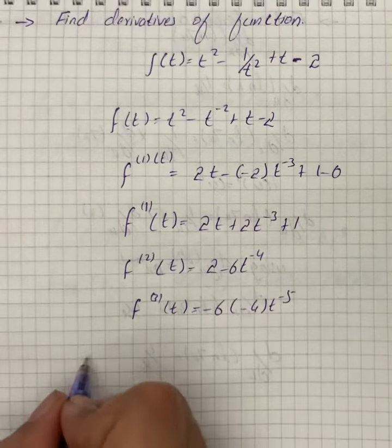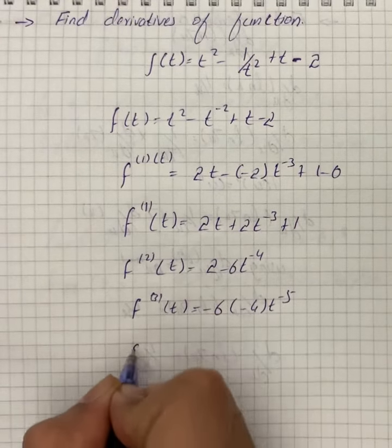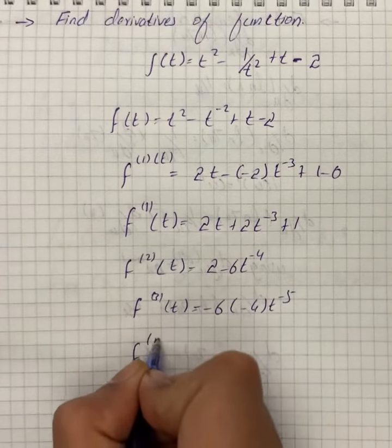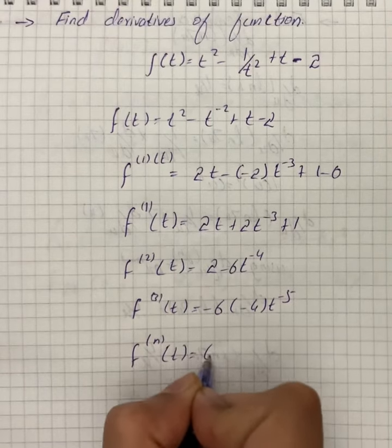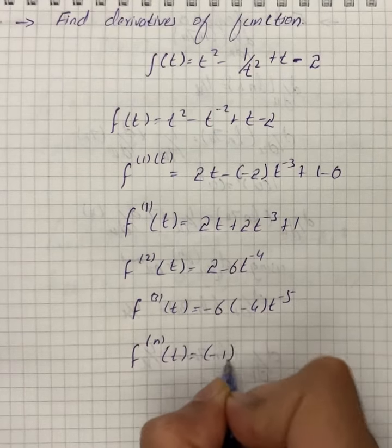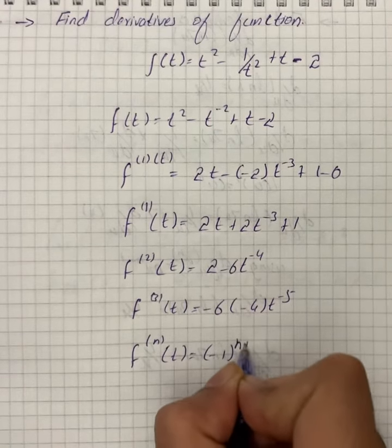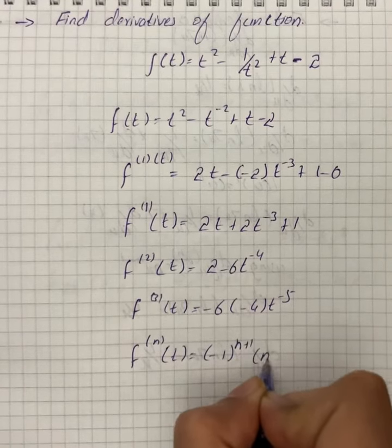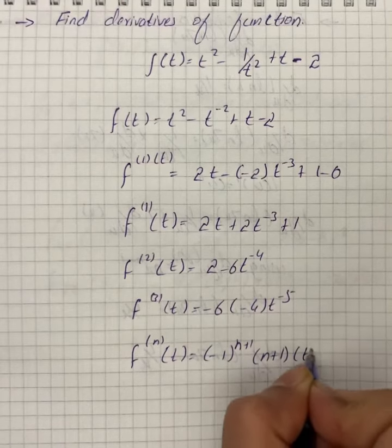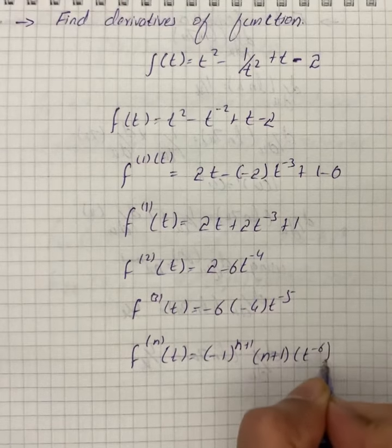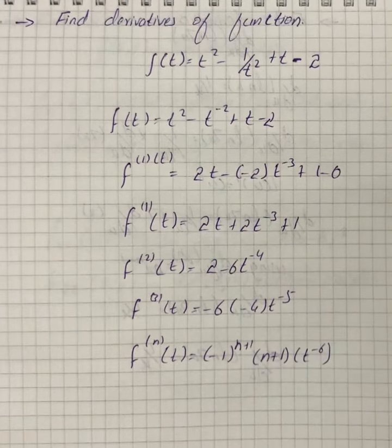Generalizing the pattern for the nth derivative, we get f^(n)(t) is equal to (minus 1) raised to the power (n plus 1) into (n plus 1) factorial into t raised to the power minus (n plus 2).